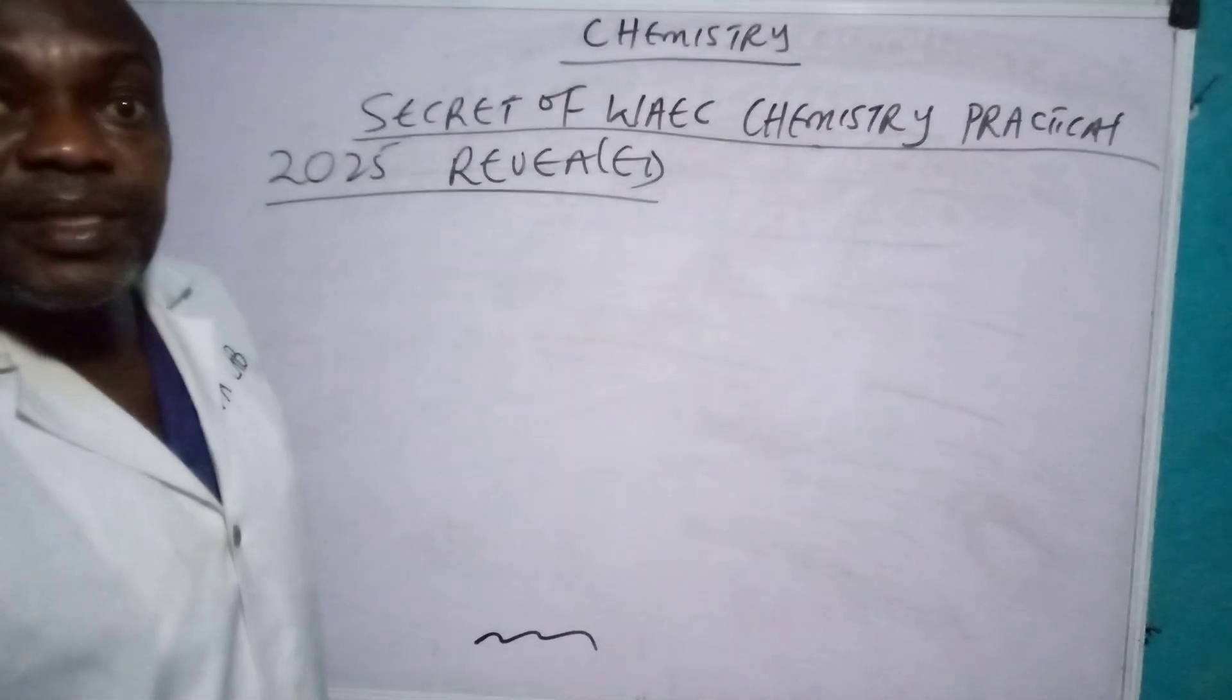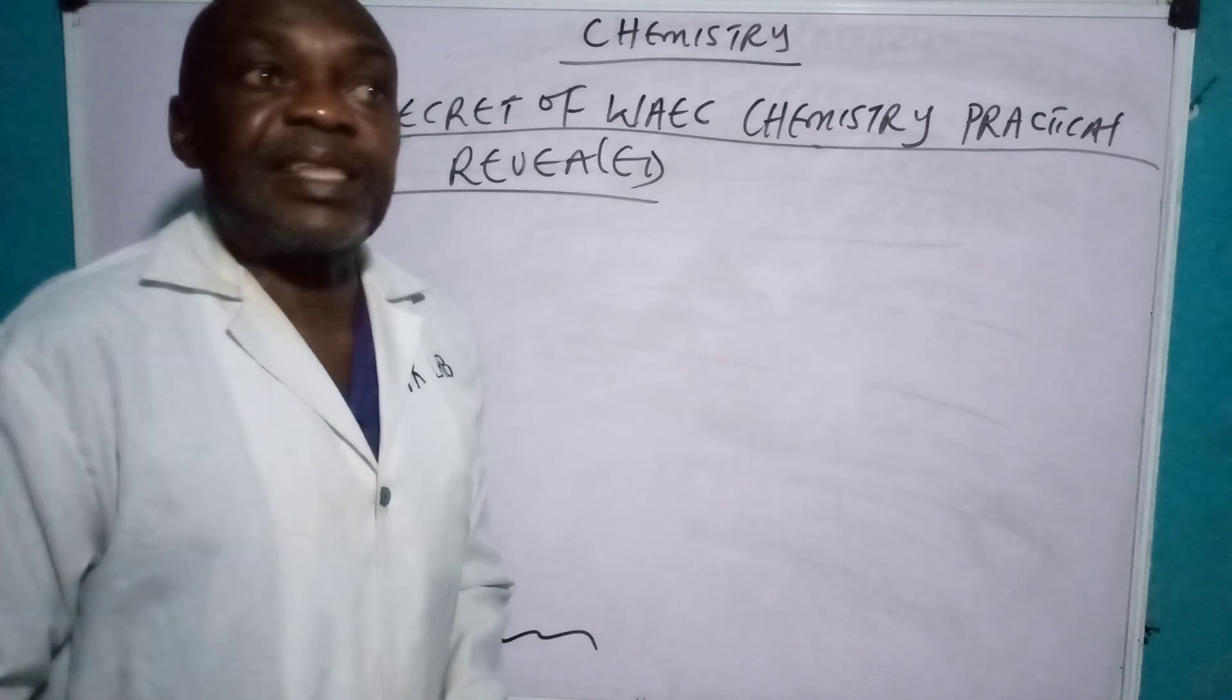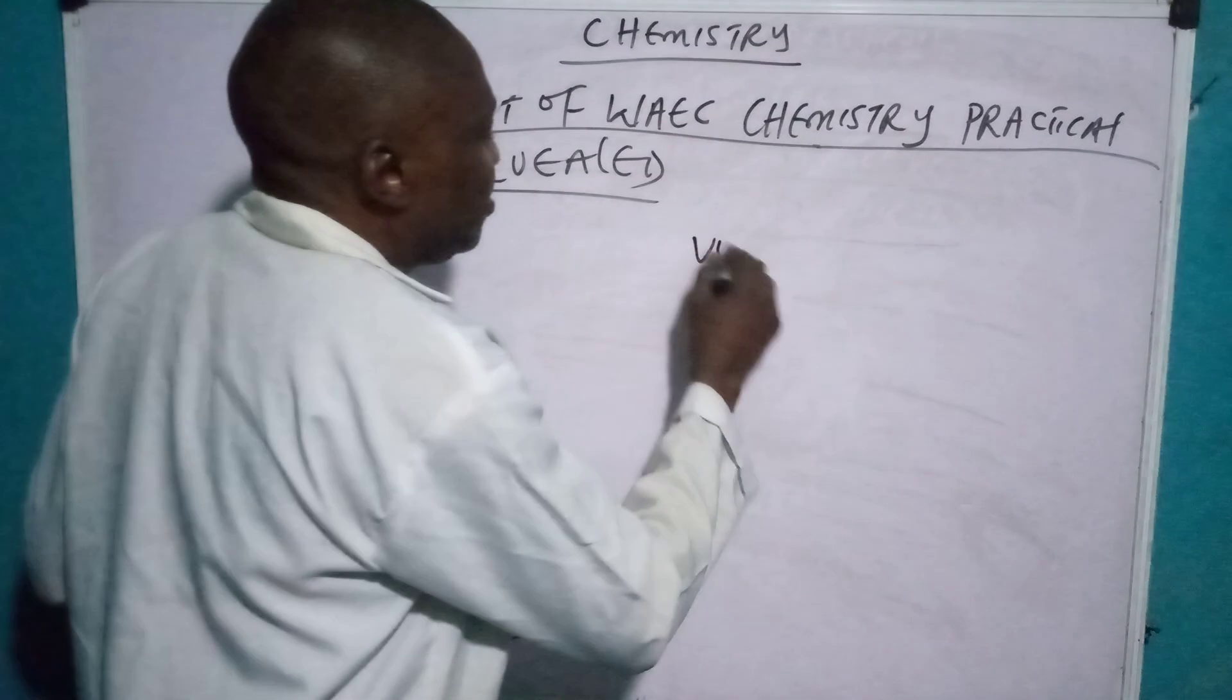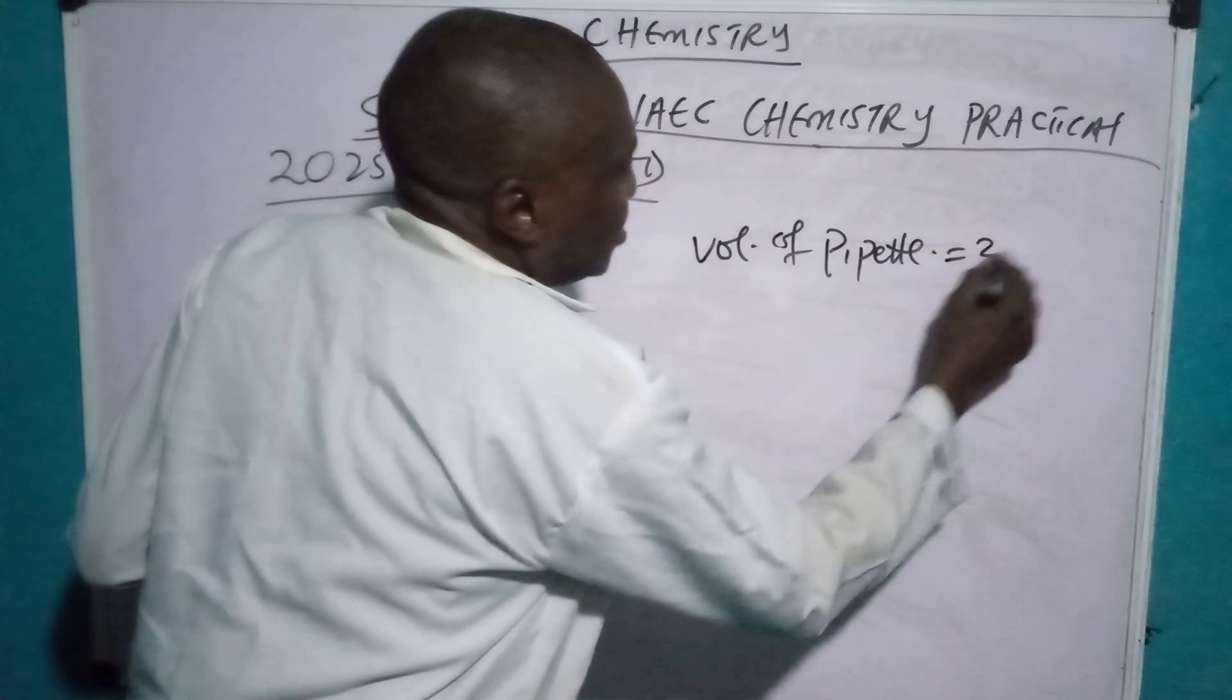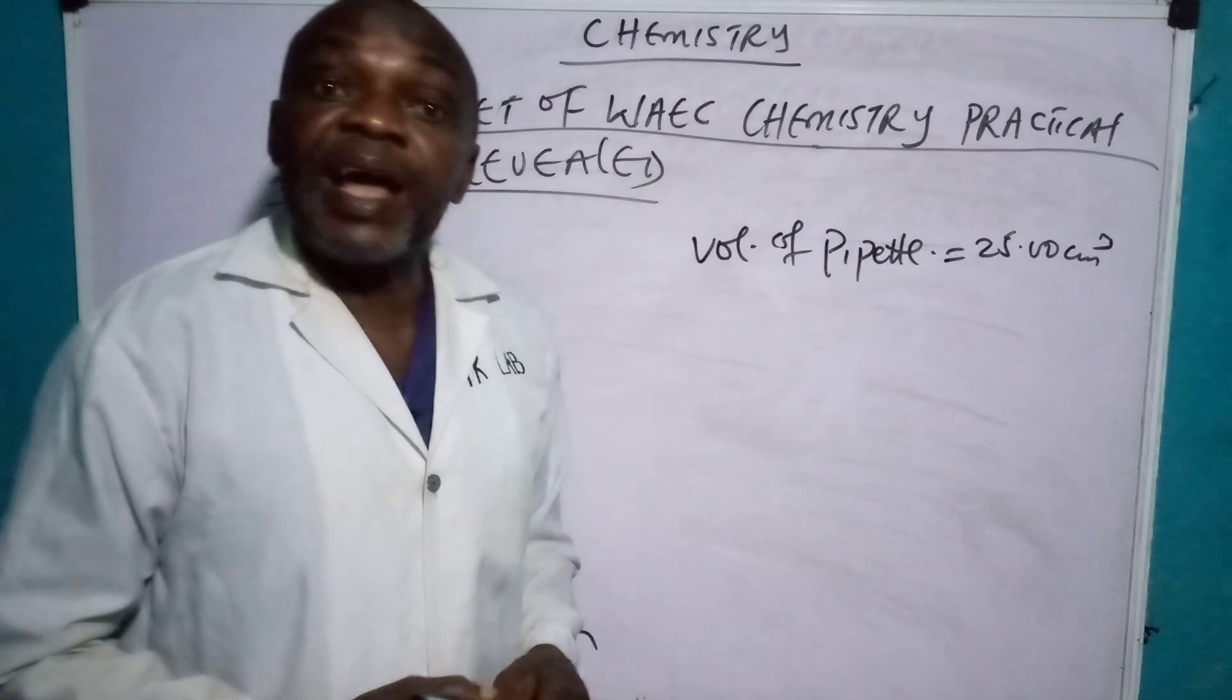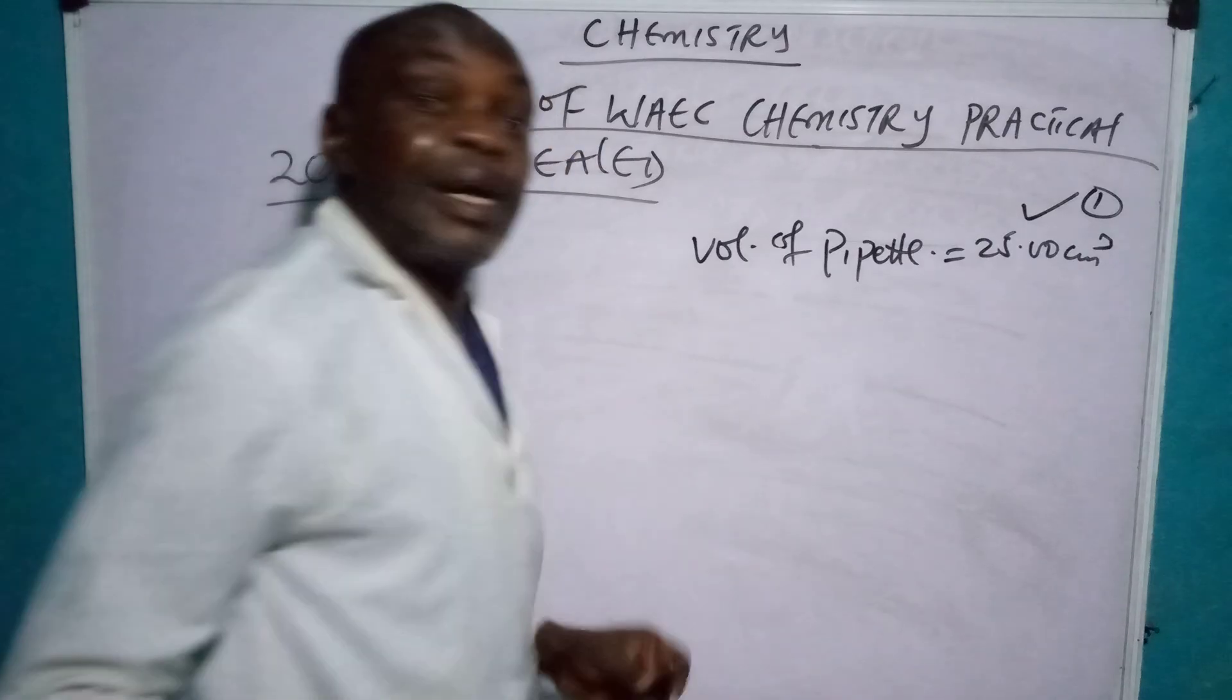Now, every burette and pipette is calibrated. You look at your pipette, it is 25 cm³. However, they also have some pipettes that are 20 cm³. Therefore, you write, first of all, on top of your table, before you draw your table: volume of pipette equals 25.00 cm³. You must check the one they gave you. Some schools use 20. Where I work, we normally use 25. So you must indicate this first. This is where the marking starts. This one is worth one mark when they are marking it.